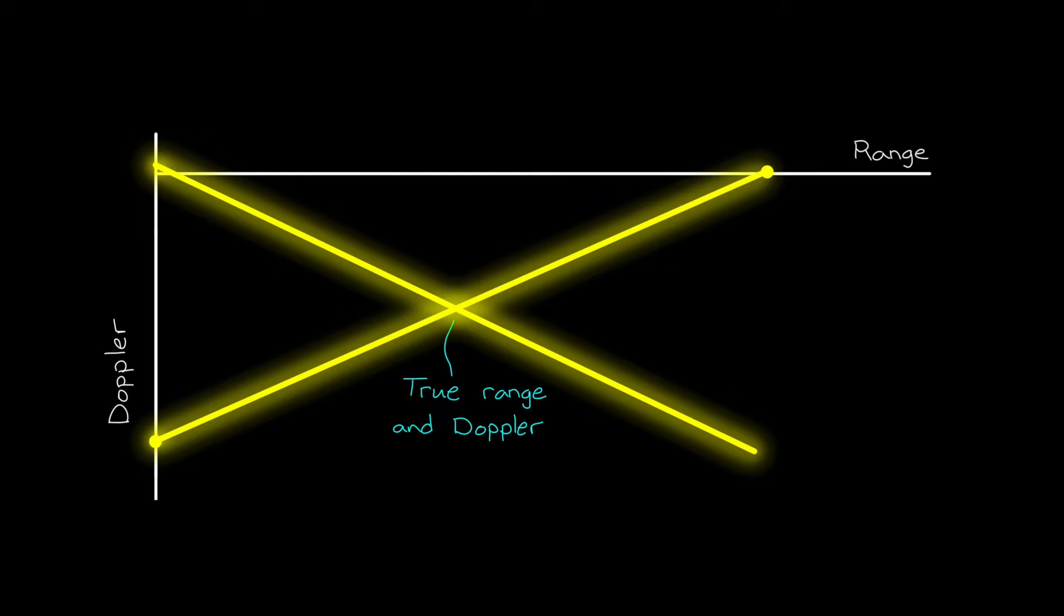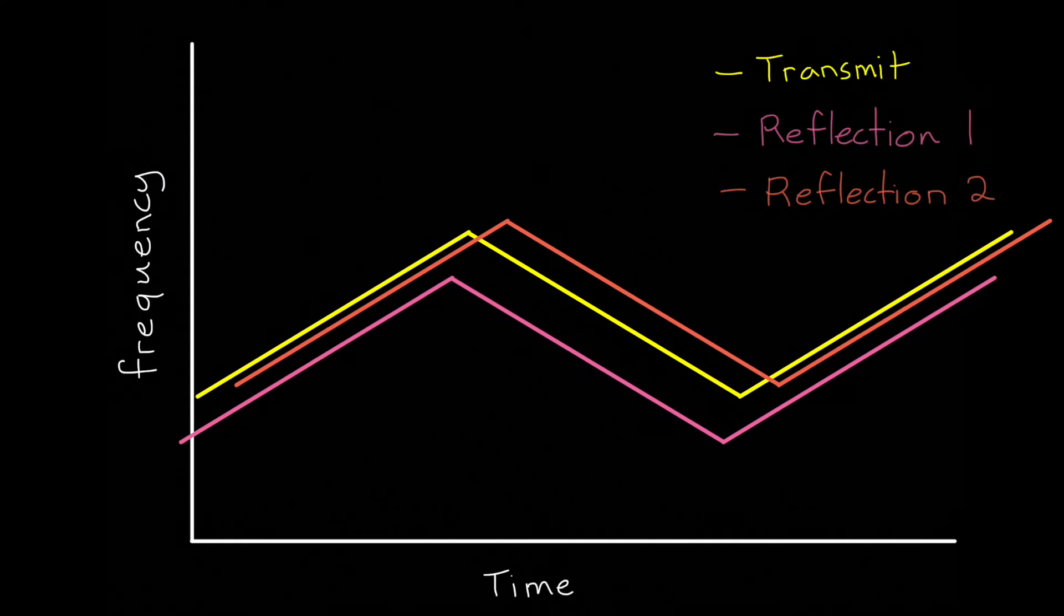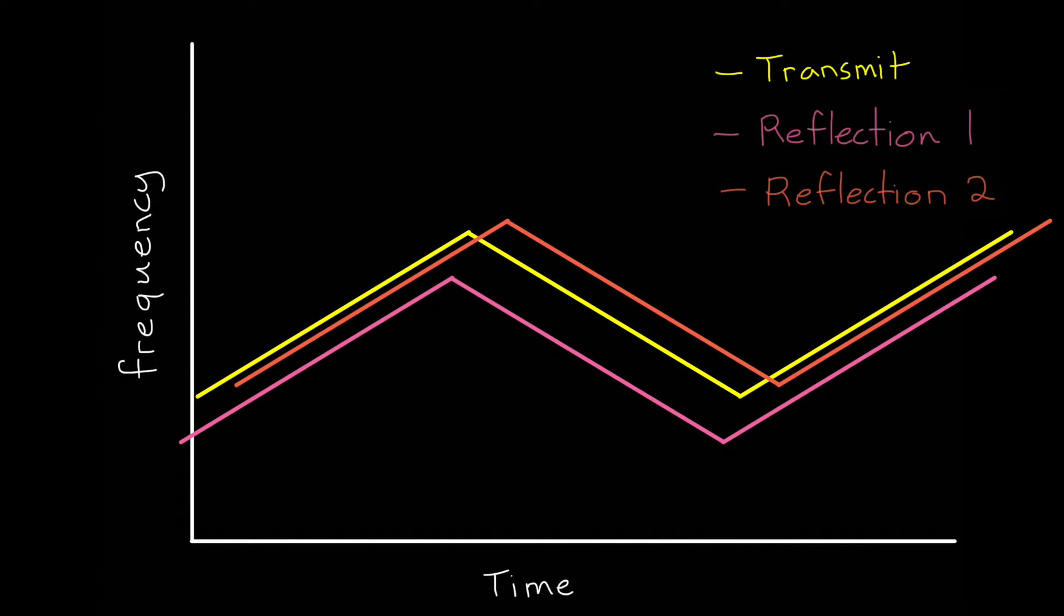But again, we have a problem here, because autonomous vehicles often encounter many objects, and sometimes there is more than just one in the line of sight of the radar beam. For example, if there are two objects in the radar beam, then each object will produce its own reflection, which means that there are two different beat frequencies for the rising slope and two for falling slope. So in total, we have four different beat frequencies that we need to interpret.